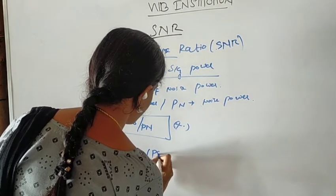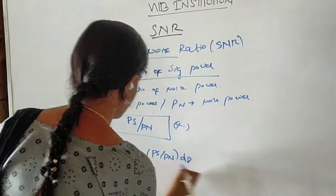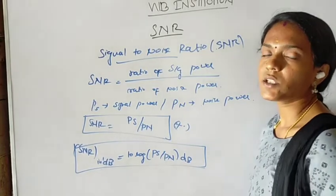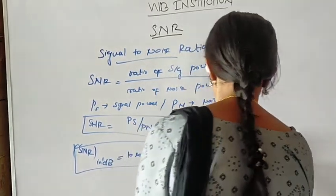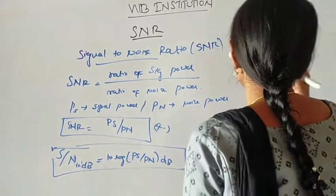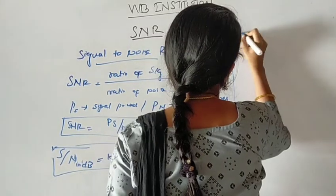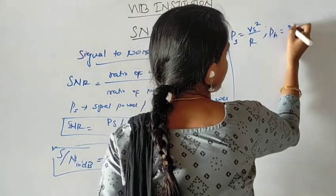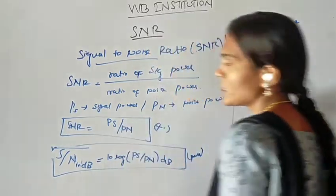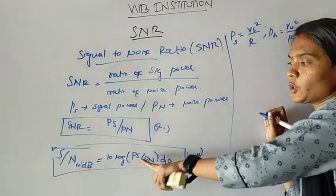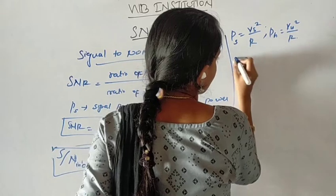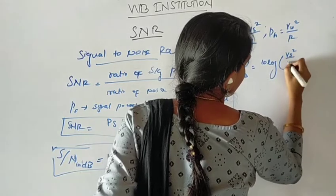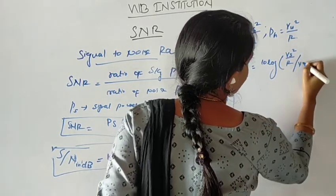SNR in dB equals 10 log of PS divided by PN, in terms of power. Next, in terms of voltage: S by N is equal to VS squared by R divided by VN squared by R.